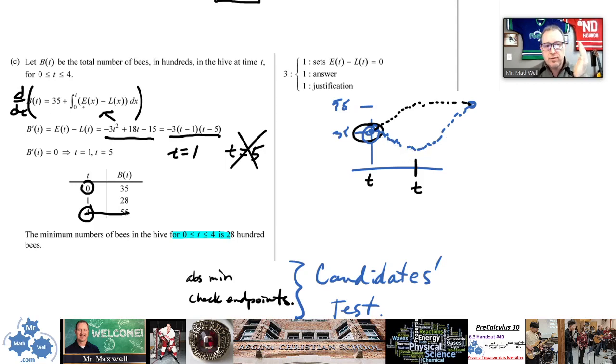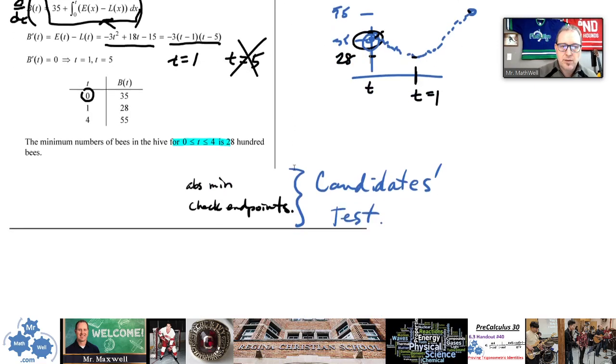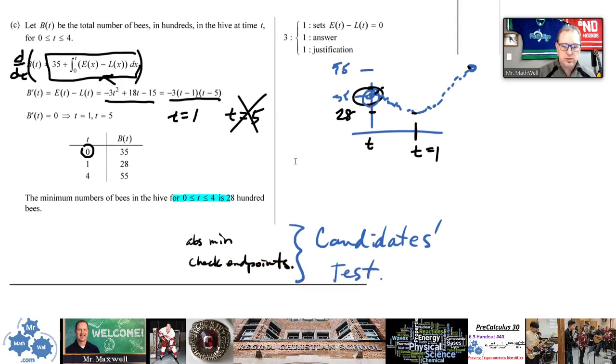So once again, find the derivative of the number of bees, which is this, the derivative of this. Find out where that derivative equals zero to find critical numbers. Use the candidates test, which includes finding the actual number of bees at each critical number and at each end point, and then compare those. And so because the lowest number here, the number of bees as a function of time is 2,800, that's the lowest value. So it does look something like this. So this would be t of one right here, and this is 2,800. So it does look an awful lot like this. So that's the answer for C there. And I think there were only three parts to that. So let me know if you have any questions about letter C.